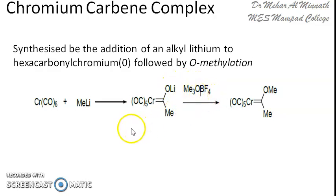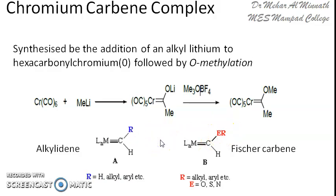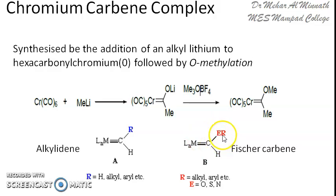That is the synthesis of the chromium-carbene complex. This chromium-carbene complex is a Fischer-type carbene, or Fischer carbene, wherein you have a heteroatom on the double-bonded carbon. In alkylidene, we have an alkyl group attached to the double-bonded carbon, while in Fischer carbene you have a heteroatom attached to the double-bonded carbon along with an alkyl group.